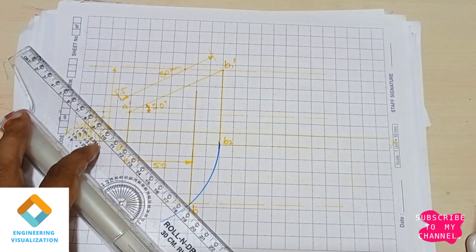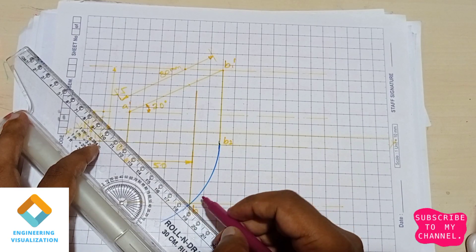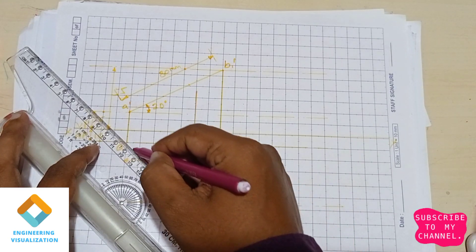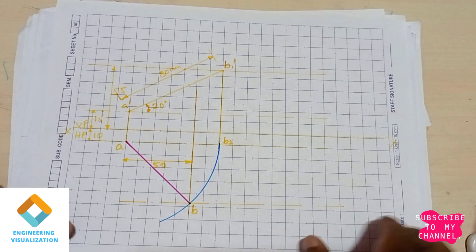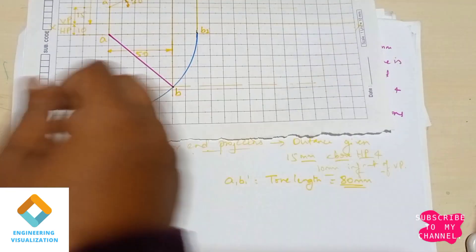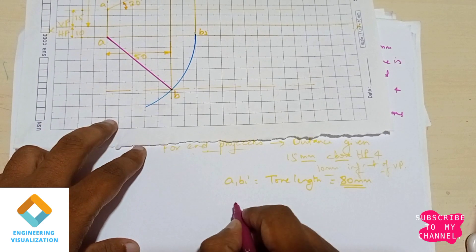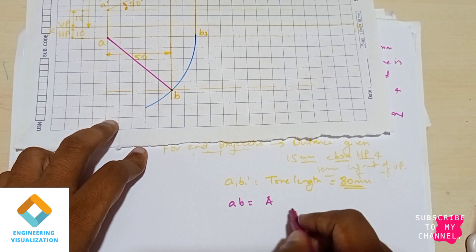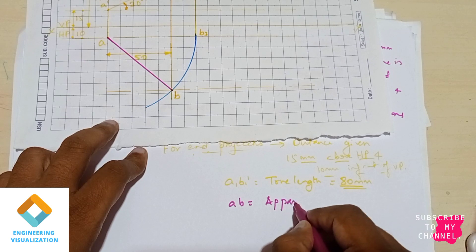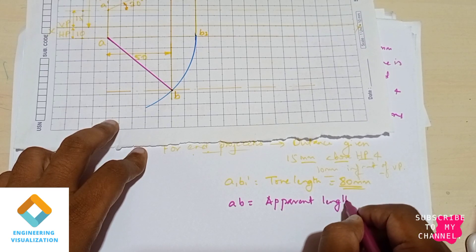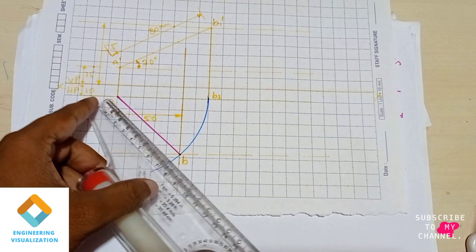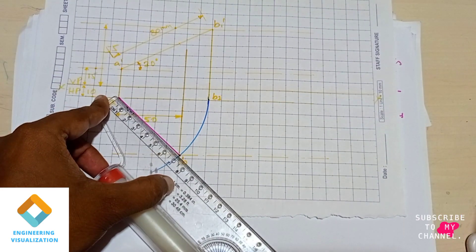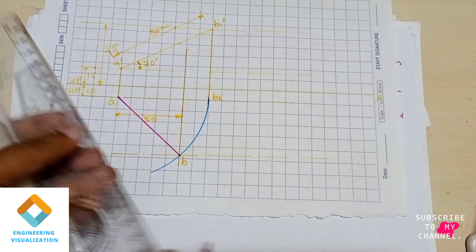From the true line by drawing a vertical line and then rotating we will get the apparent length. This is A B — the length A B is nothing but your apparent length. So the apparent length dimension, we are going to measure it — it is nothing but 70 mm.